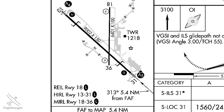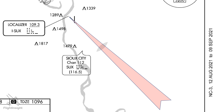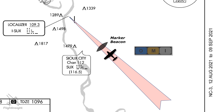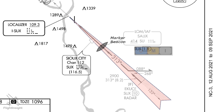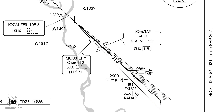Besides the localizer and glide slope, many ILS approaches provide distance information using marker beacons. The football symbol indicates an outer marker, typically between 4 to 7 miles from the runway, indicating where the aircraft will intercept the glide slope at minimum altitudes — this is the point where the aircraft should normally be configured for the approach. When passing over the outer marker, the aircraft with the proper equipment will receive an indication in the cockpit. Marker beacons are used less and less, and distance information is now provided through DME or GPS. You can see the localizer feather and the football shape for the outer marker on the plate. The right side of the feather is always shaded on a localizer front course, as opposed to the left side, which would be on a back course.